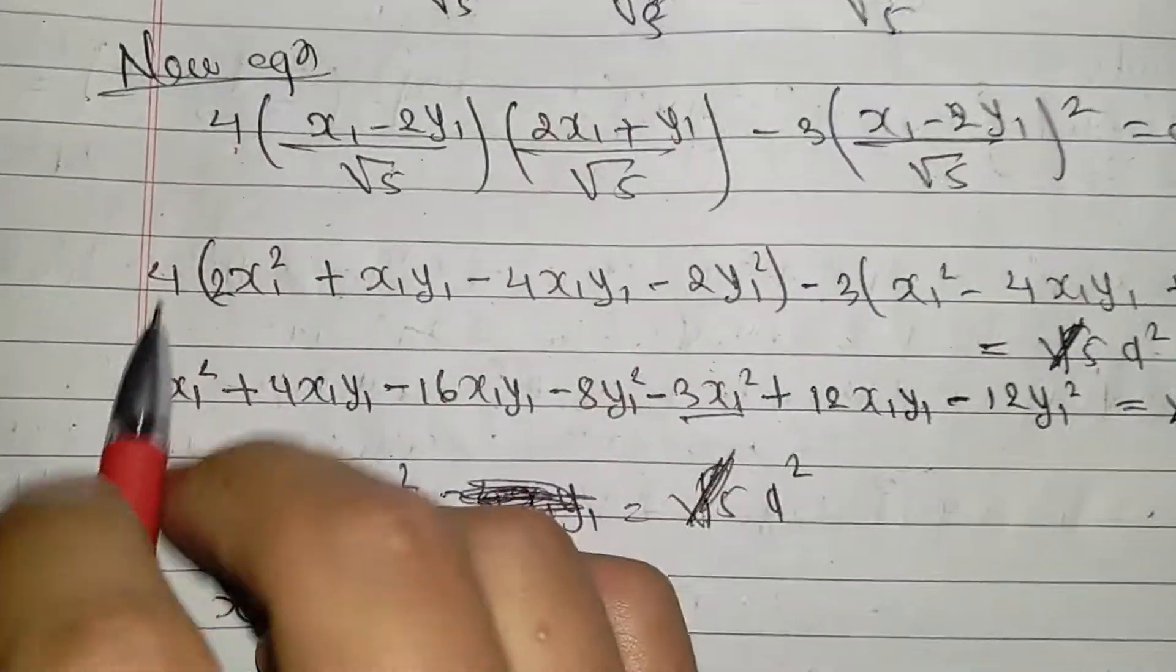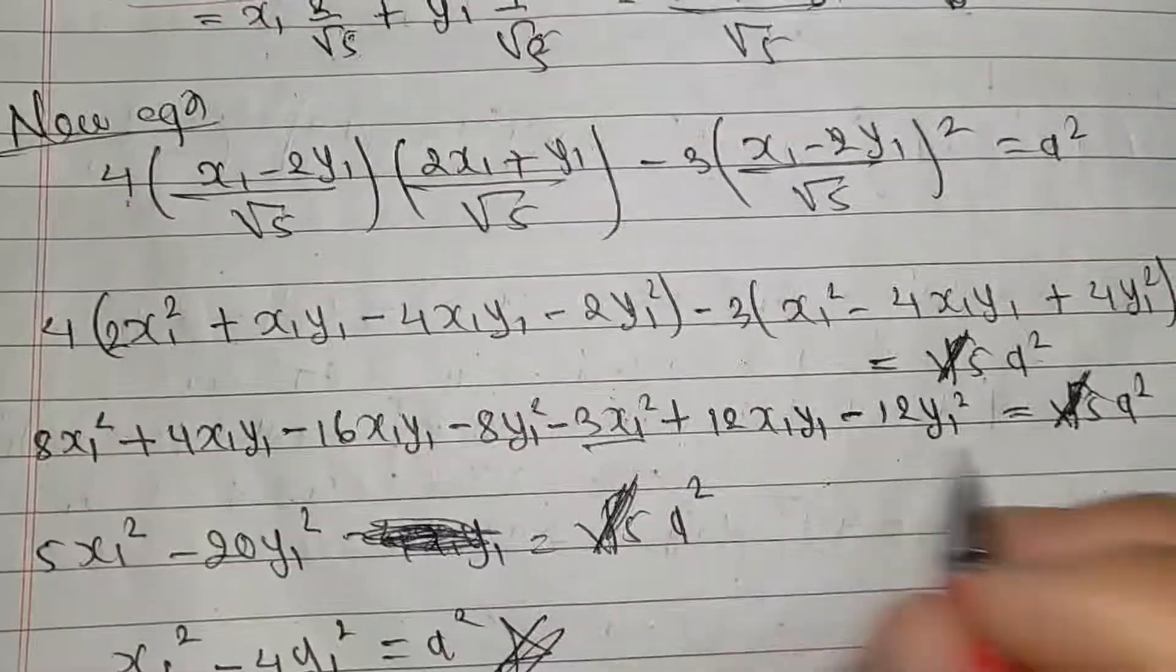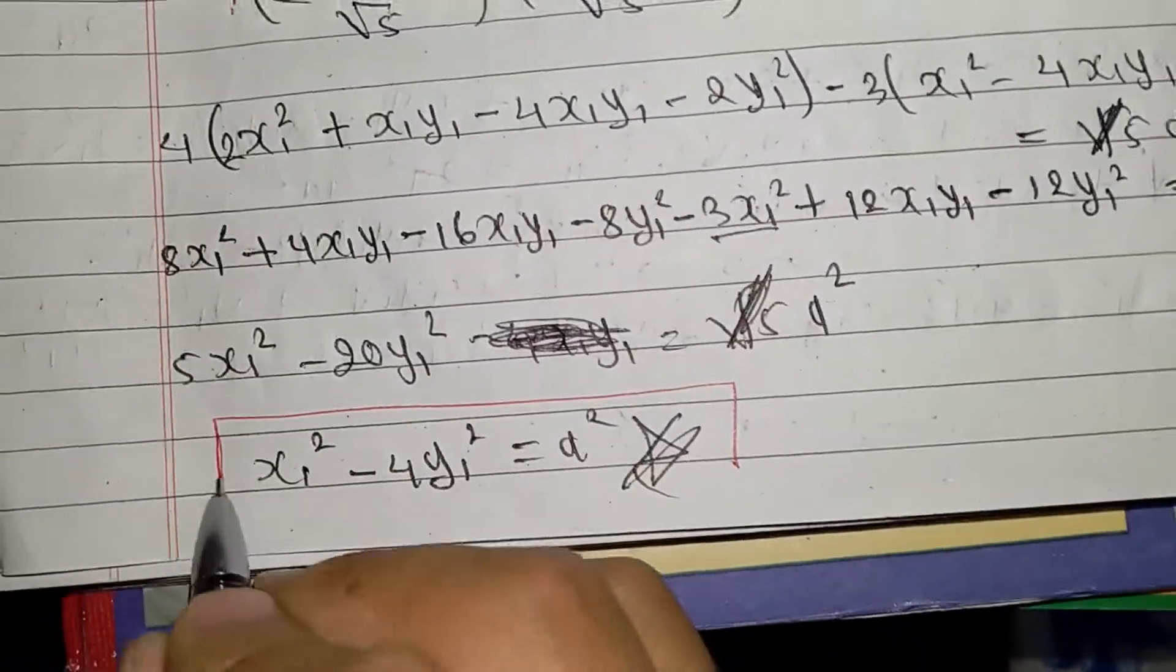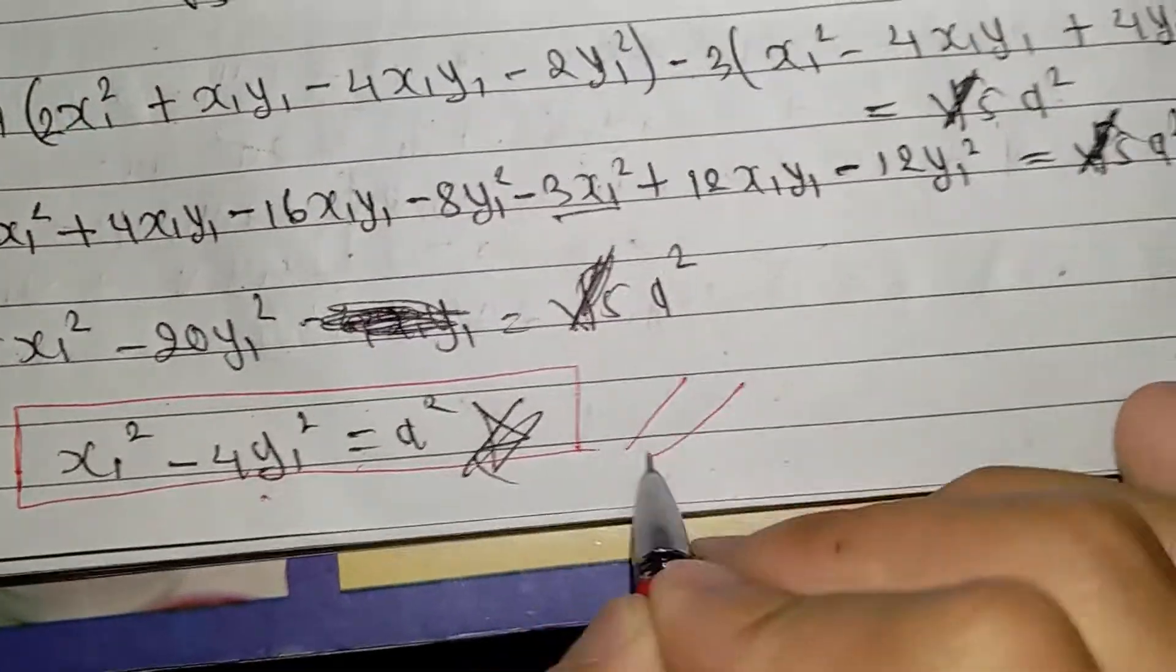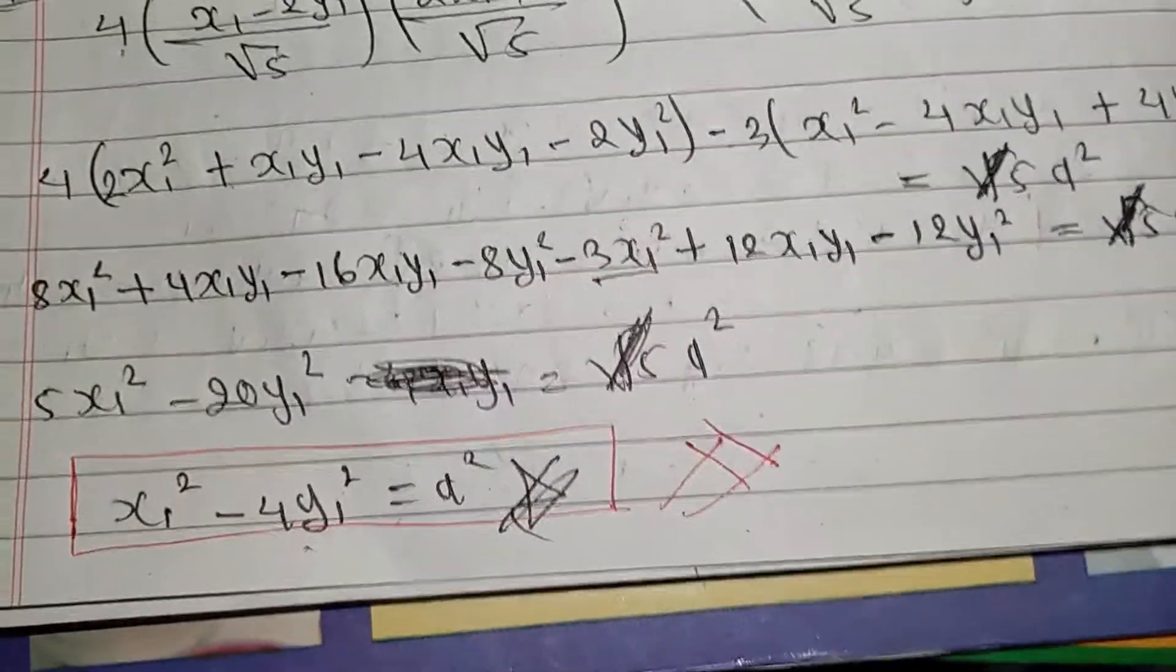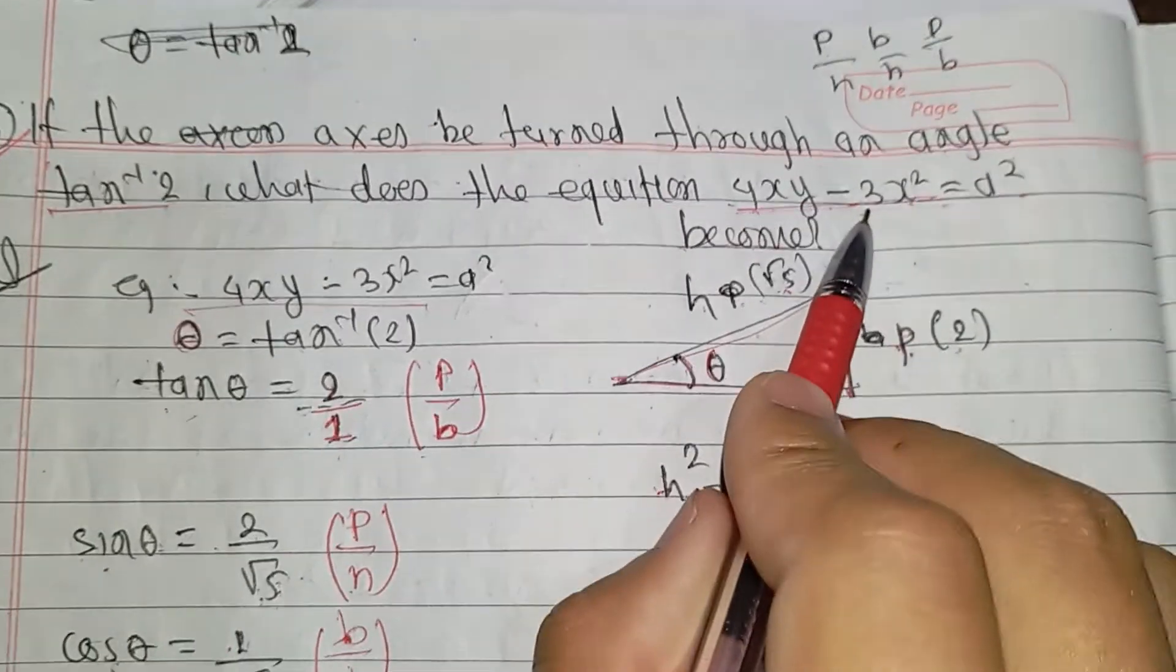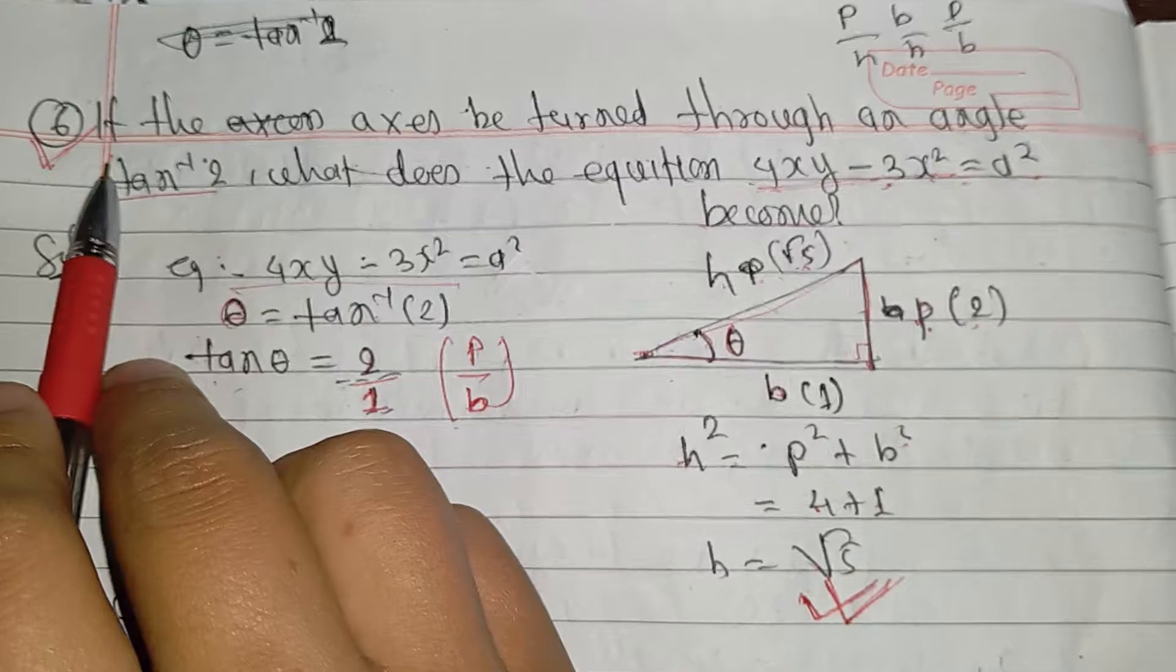After simplification, the final answer is: 4x1 square minus 4y1 square equals a square. This is an important question and you should follow this method in mathematics.